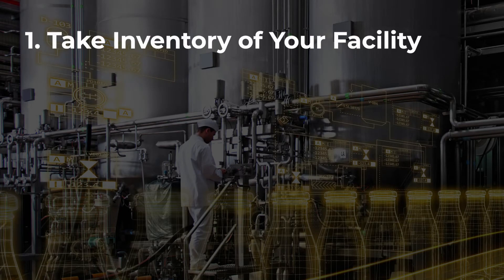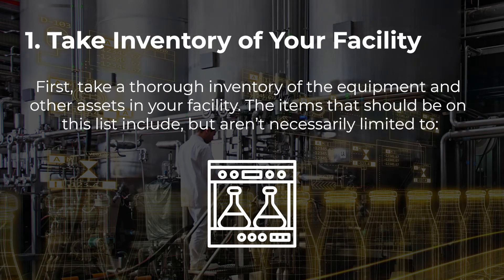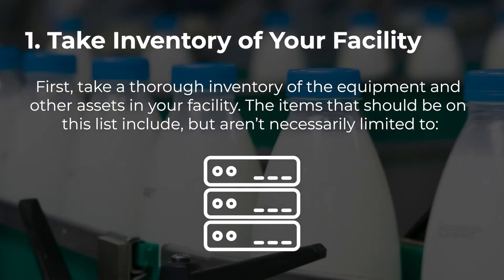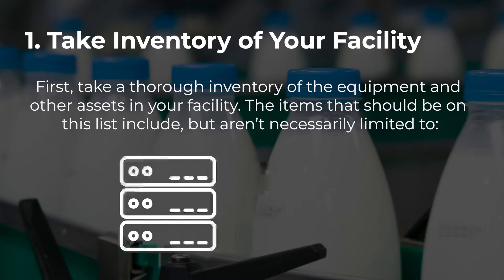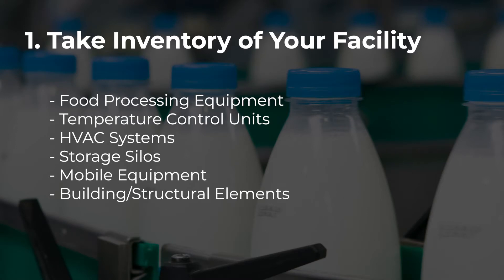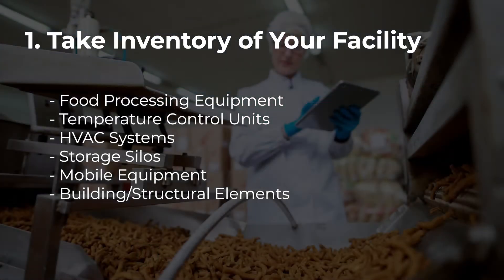Take inventory of your facility. First, take a thorough inventory of the equipment and other assets in your facility. The items that should be on this list include, but are not necessarily limited to: food processing equipment, temperature control units, HVAC systems, storage silos, mobile equipment, and building and structural elements.